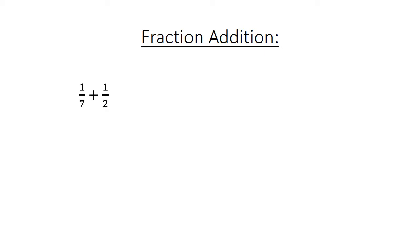Fraction addition. 1 over 7 plus 1 over 2 equals. Find the lowest common multiple. 2 over 14 plus 7 over 14 equals 9 over 14.